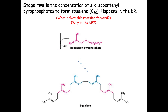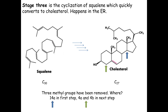Squalene is not soluble in water — it's rather long and flexible, and all the bonds except the double bonds are free to rotate. We can arrange this molecule into different shapes. Several enzymes shape this molecule so that the A, B, C, and D rings form and the last piece becomes the tail. There's a series of cyclization steps with a bunch of enzymes involved. We end up with our steroid core, and along the way we remove three methyl groups — one at position 14 and two at position four — and we add our hydroxy group to get cholesterol.